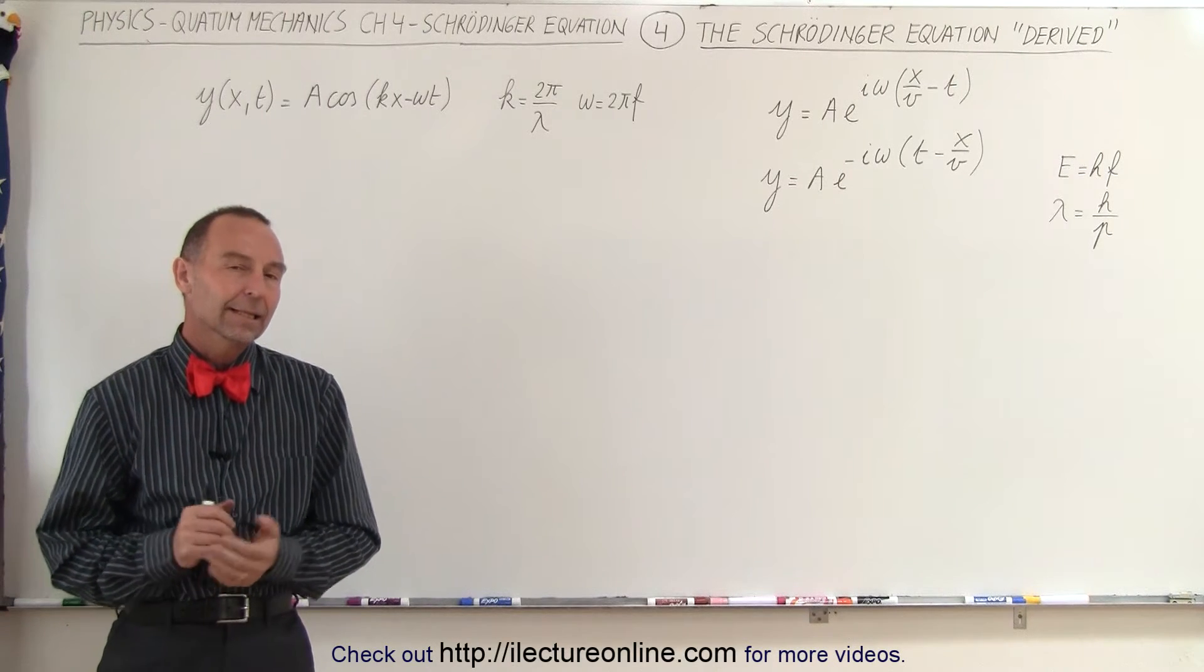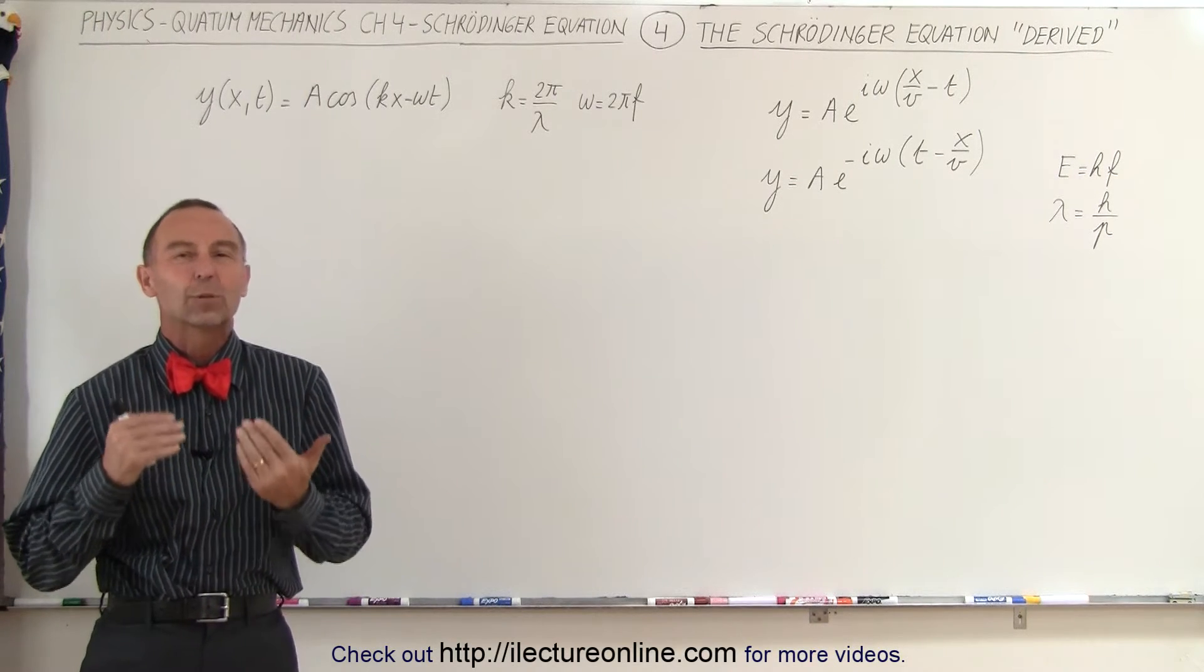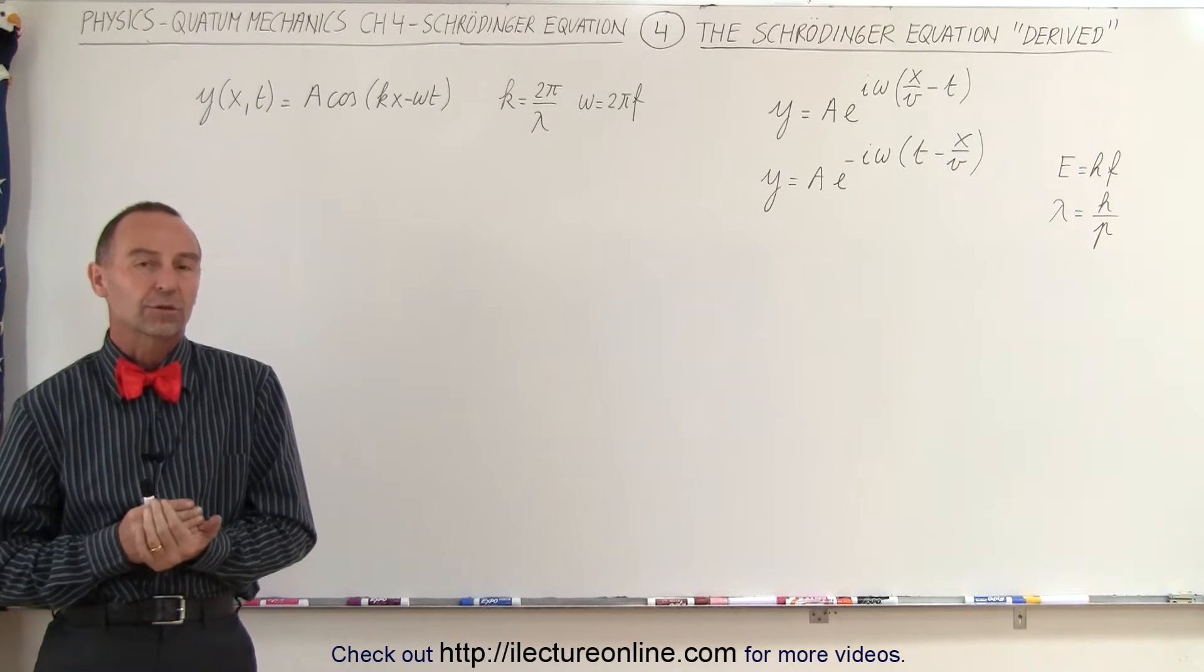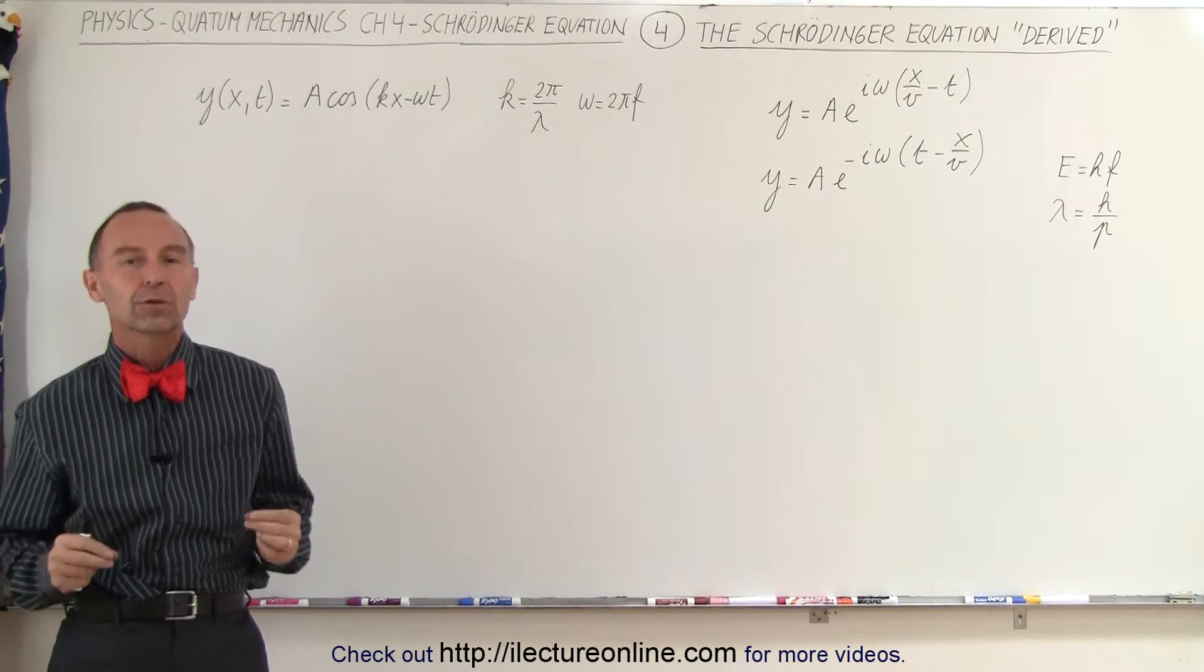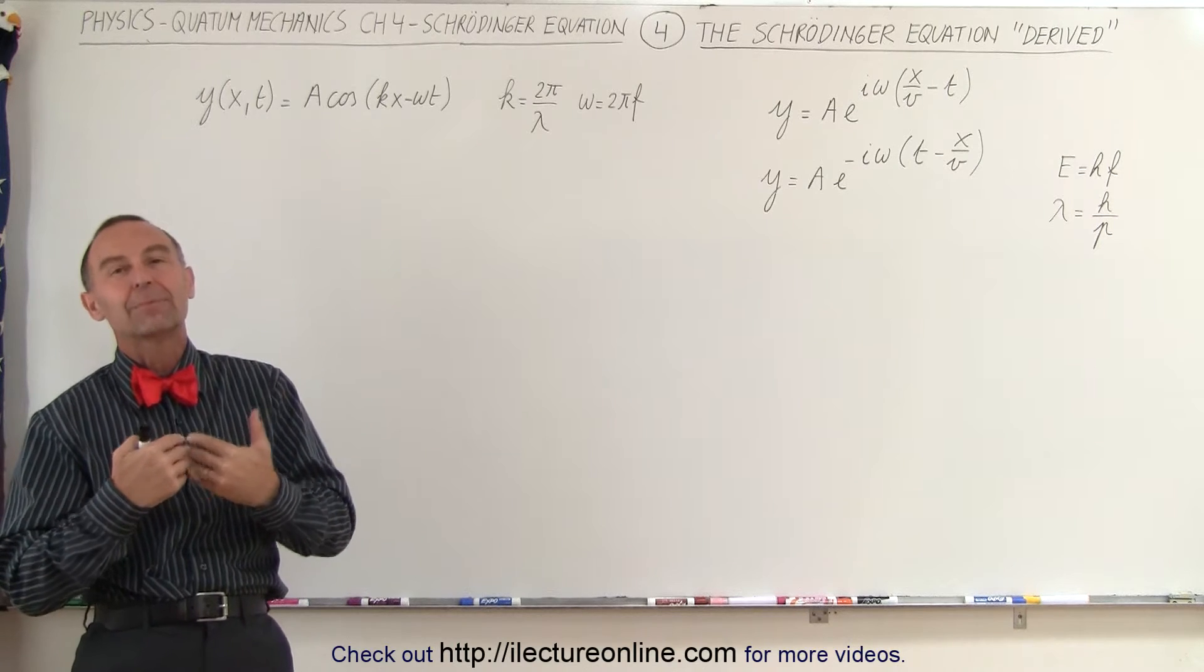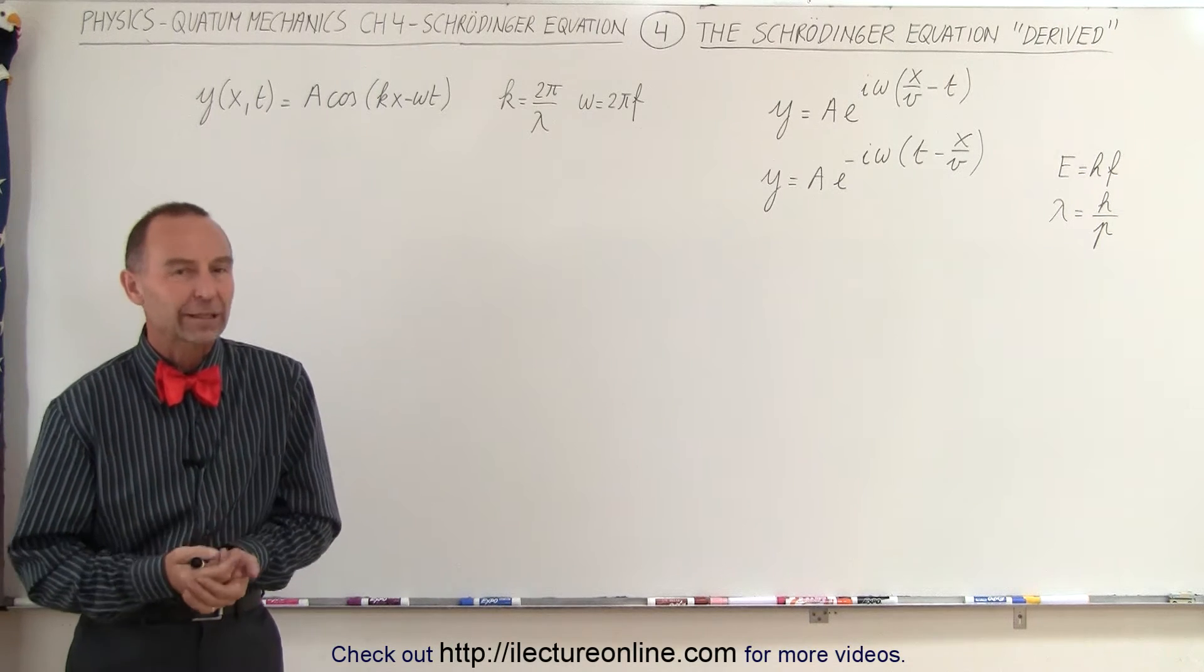Welcome to iLectureOnline. Now we know there's no real way to derive the Schrödinger equation. There's no mathematically correct way to do that. In several places we have to kind of take a leap of faith and hope that we were correct in doing so.